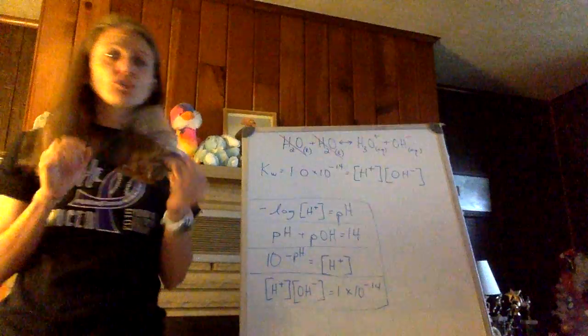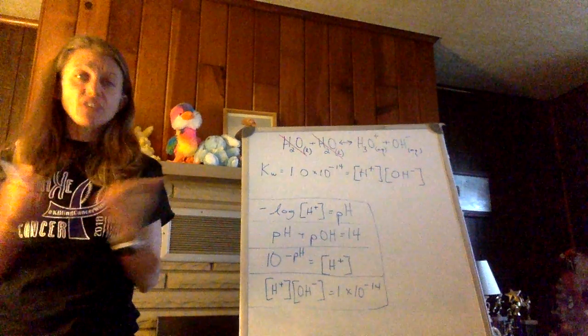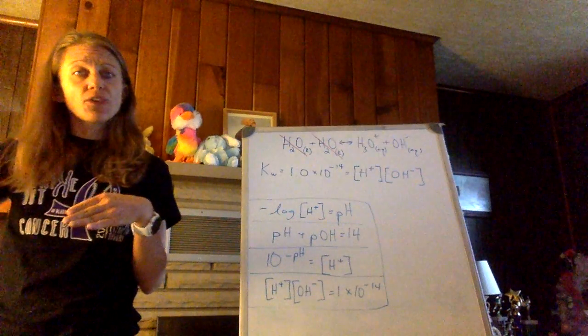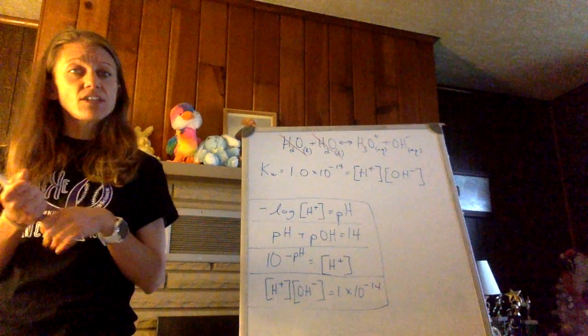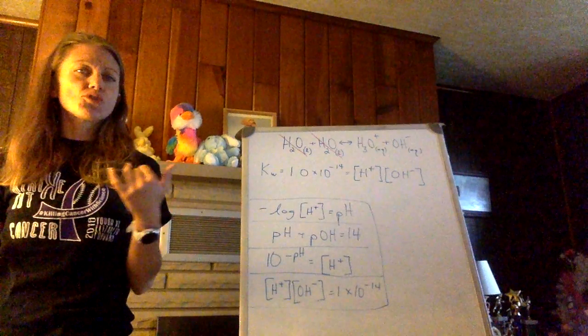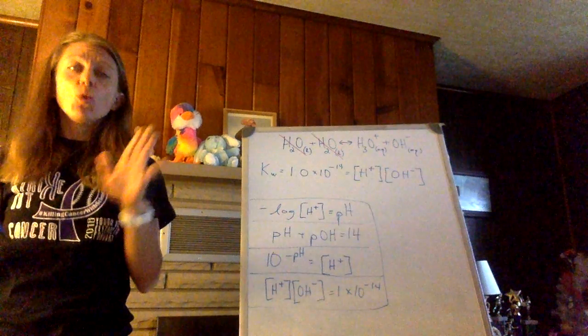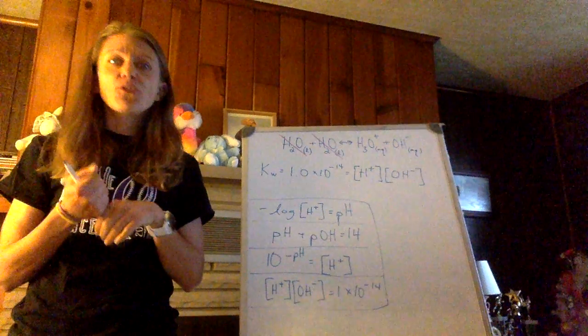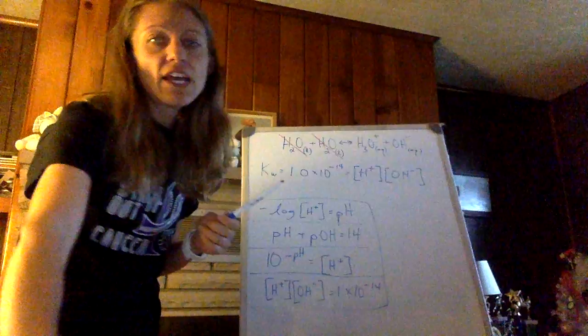Now we haven't talked about pH yet. pH of 7 is neutral. pH less than 7 acidic. Greater than 7 is basic. Normally you'll see pH between 1 and 14. We will see some in here that are tending down below 1 towards 0 that are very acidic.